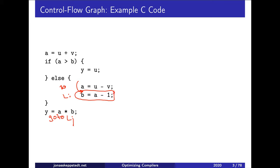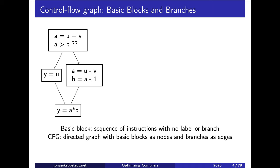So there are no branches into the middle of a node, and only a branch out at the end. This directed graph is used during essentially all optimizations. It is called the control flow graph; the nodes are called basic blocks and the edges are the branches.